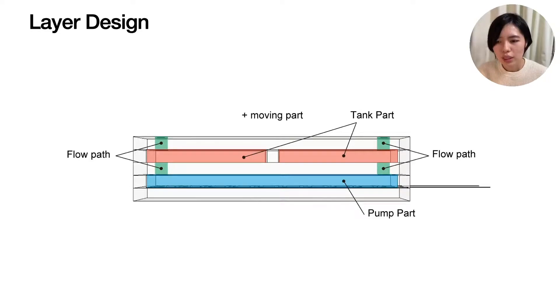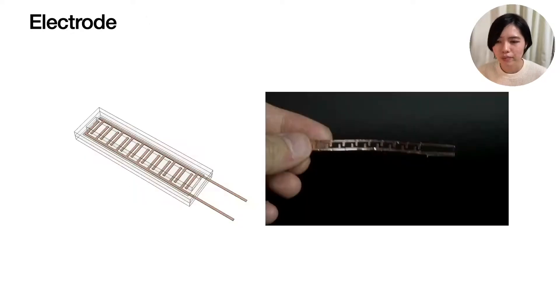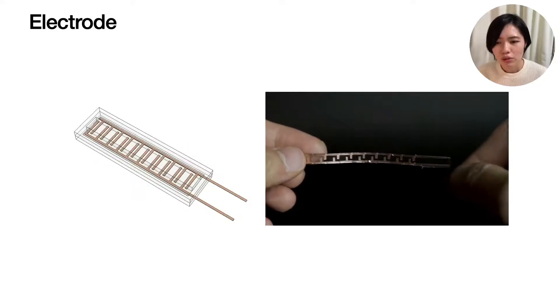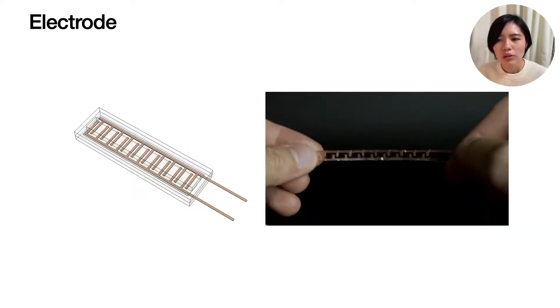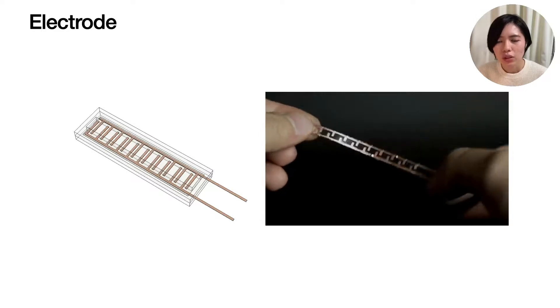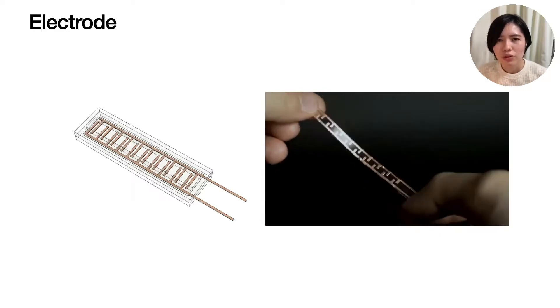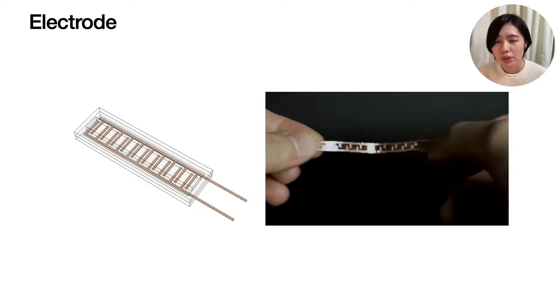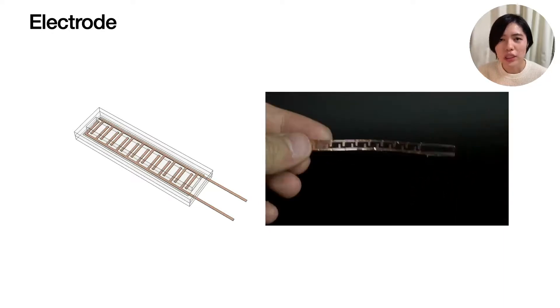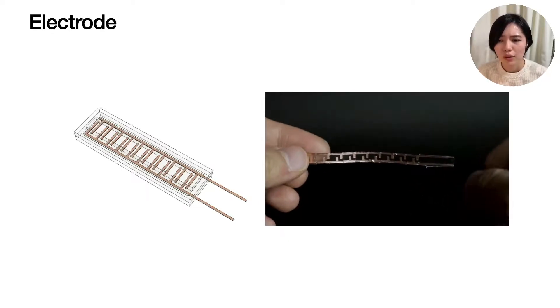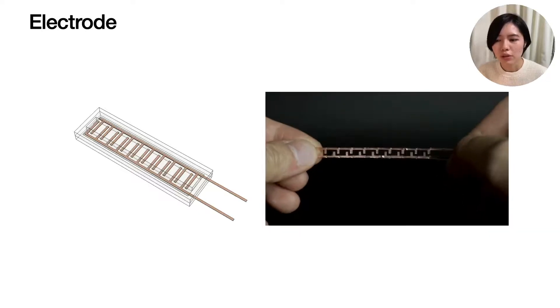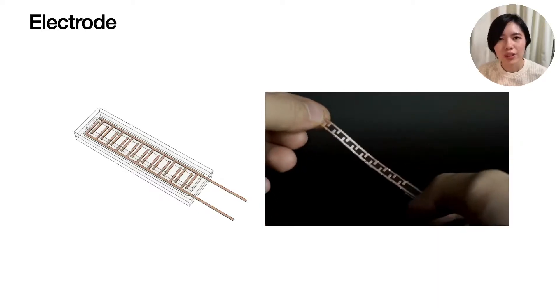The pump plate contains electrodes that are cut out with a cutting plotter. The electrodes are made of PET sheets and conducting materials, which is soft and can bend. Various shapes of electrode arrangements have been proposed in previous research of EHD pumps. In this project, we used a comb-shaped electrode that can be made into a flat surface.